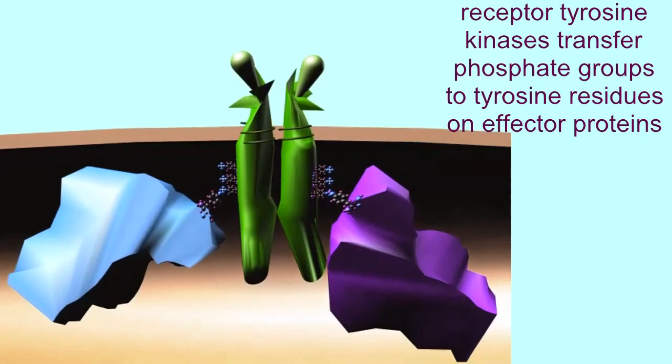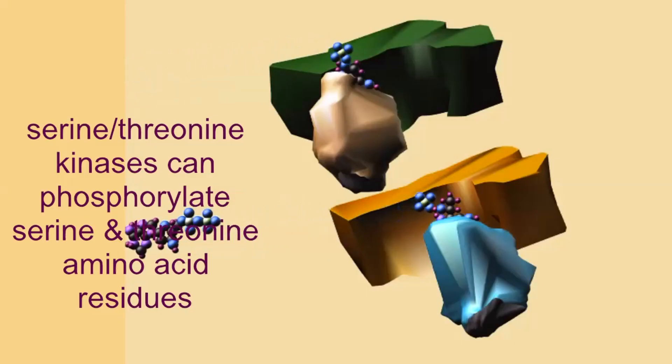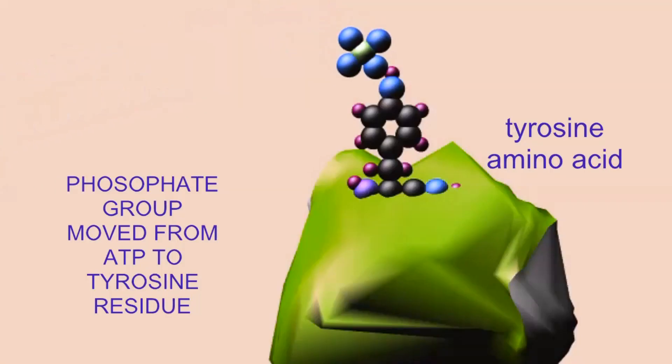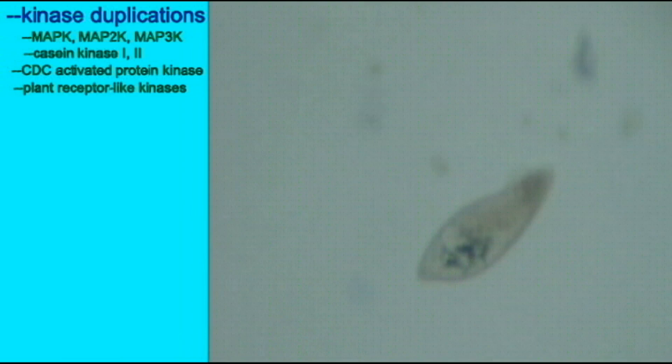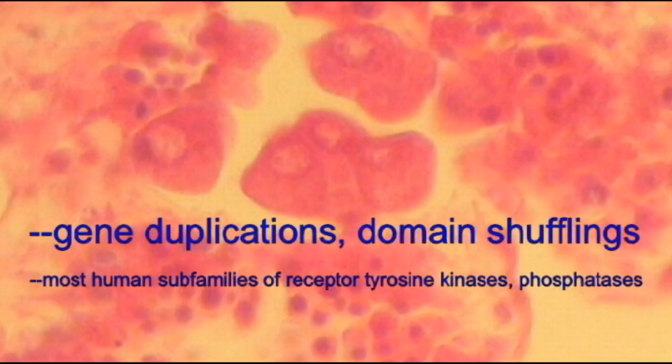Thus, there are enzymes known as serine or threonine kinases—this is one gene family—and tyrosine kinases—this is a second gene family. Humans have hundreds of genes in the kinase gene families, and this is one of the largest gene families in the human genome.